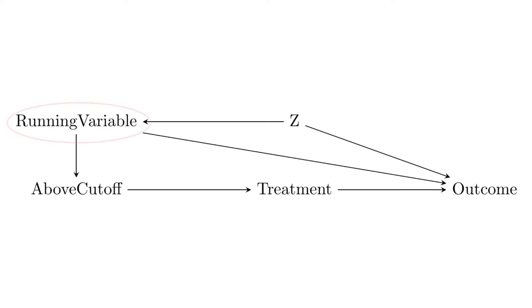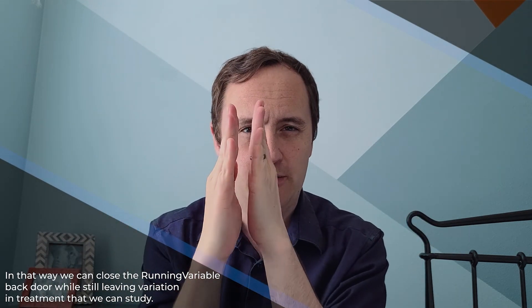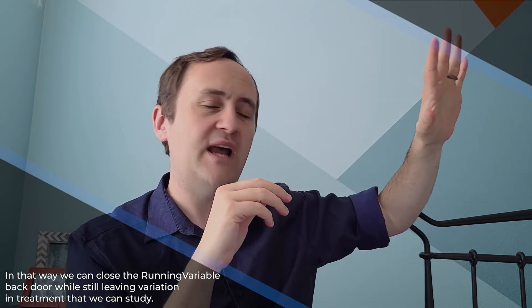We think those people are pretty comparable, but one got treated and one didn't, so we can isolate the effect of the treatment and close all the backdoors — even for things we cannot measure. We're controlling for all parts of the running variable except the tiny bit just around the cutoff. By isolating just that part of the variation, we're isolating a relationship between the running variable and the outcome that has a causal interpretation, letting us get the causal effect — for example, of being in Mexico.